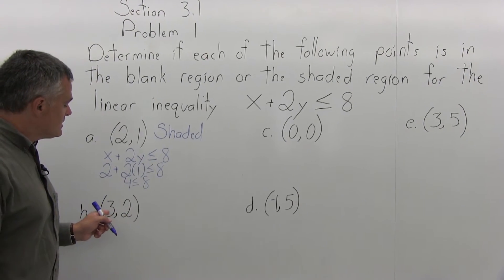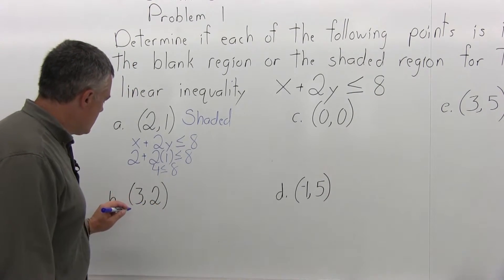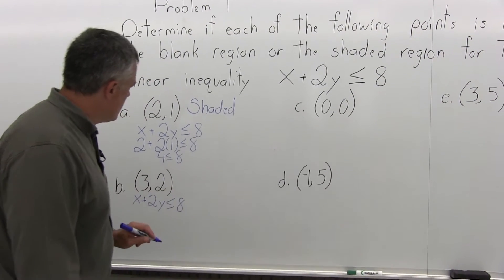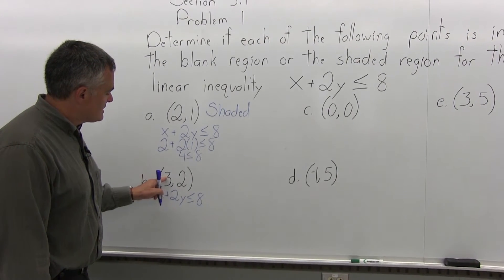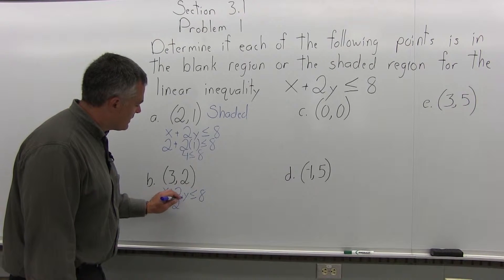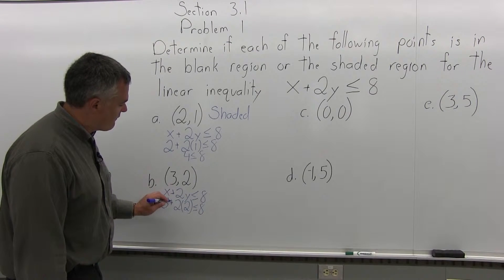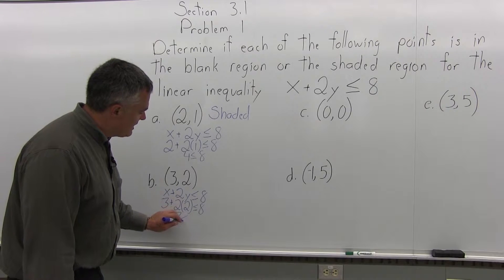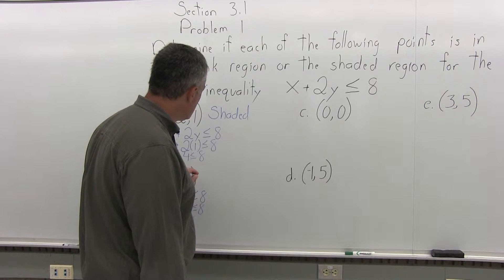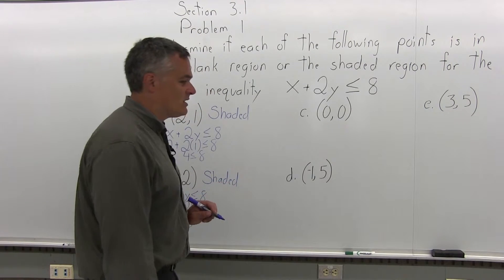Part b: is the point 3 comma 2 in the shaded region or the blank region of x plus 2y is less than or equal to 8? Start with the inequality and put in 3 for x and 2 for y. So 2y becomes 2 times 2, giving 3 plus 4, which is 7 is less than or equal to 8. That's certainly true — 7 is less than 8. So the point (3, 2) is also in the shaded region.